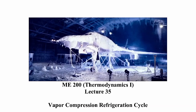Hi everyone. This is lecture 35. In this lecture, we're going to be talking about vapor compression refrigeration cycles. The picture here is of an aircraft being tested for cold regions operation. You can see the aircraft inside a hangar, obviously very cold with a lot of snow and ice accumulated on the ground as well as the aircraft. This is a dramatic example of trying to refrigerate an interior space.